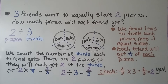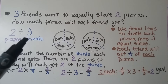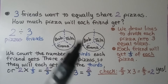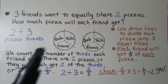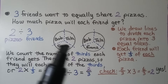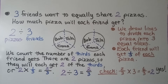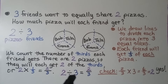3 friends want to equally share 2 pizzas. How much pizza will each friend get? We have 2 pieces that we need to divide by 3 friends. We can draw 2 circles for the pizzas and draw lines to divide each pizza into 3 equal slices. Each friend will get 1 third of each pizza. There are 2 pizzas, so they'll each get 2 thirds. That's 2 times 1 third equals 2 thirds.